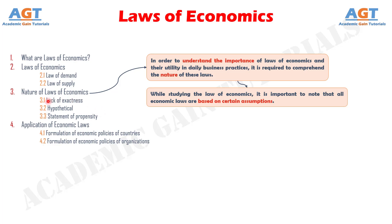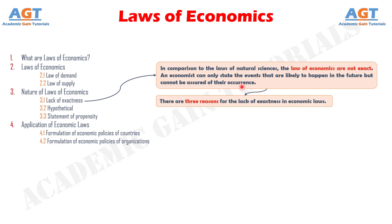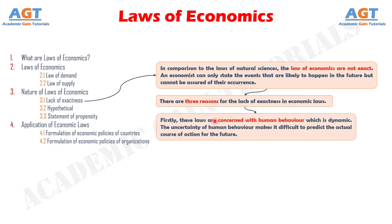The first nature of laws of economics is lack of exactness. In comparison to the laws of natural sciences, the laws of economics are not exact. An economist can only state the events that are likely to happen in the future but cannot be assured of their occurrence. There are three reasons for the lack of exactness in economic laws. Firstly, these laws are concerned with human behavior which is dynamic. The uncertainty of human behavior makes it difficult to predict the actual course of action for the future.